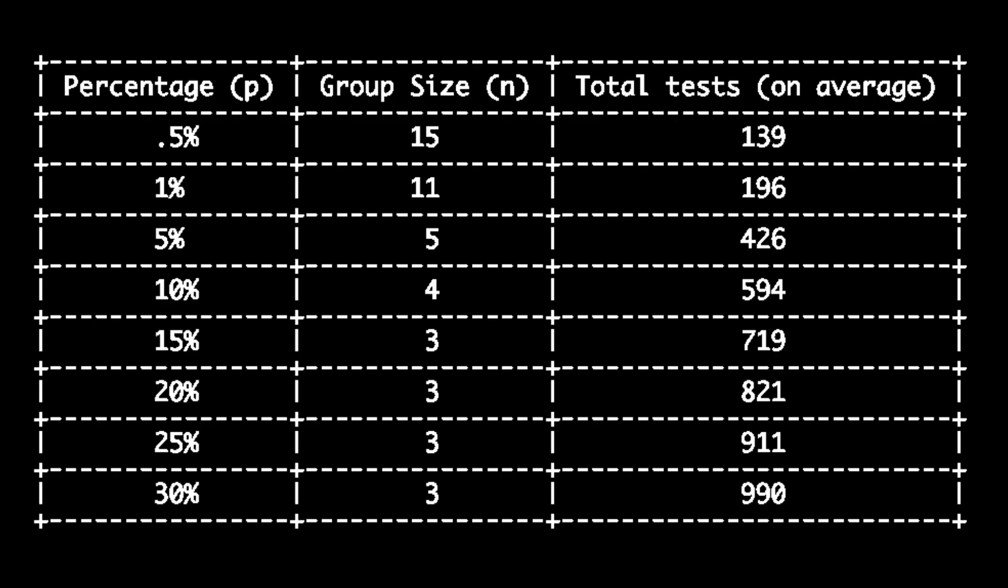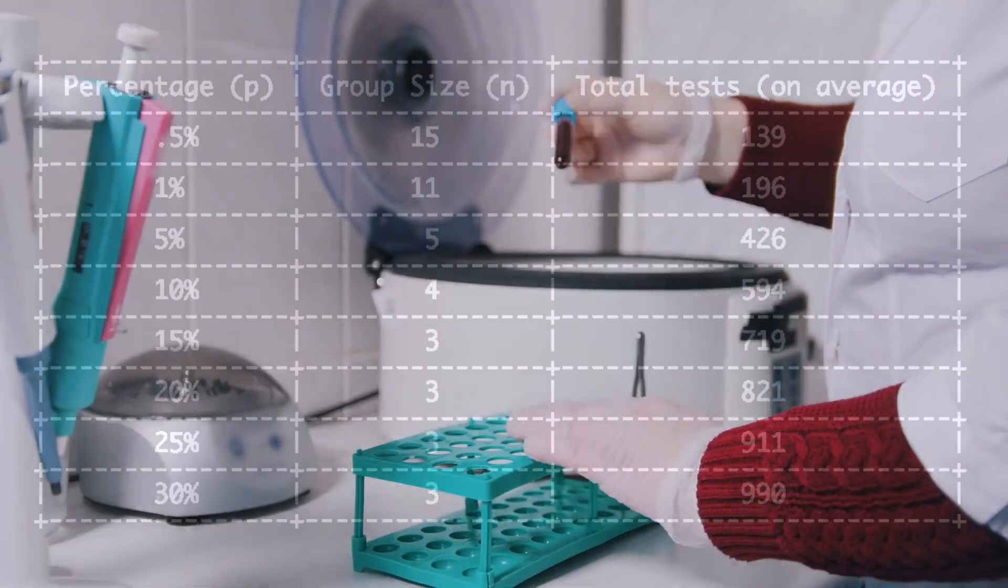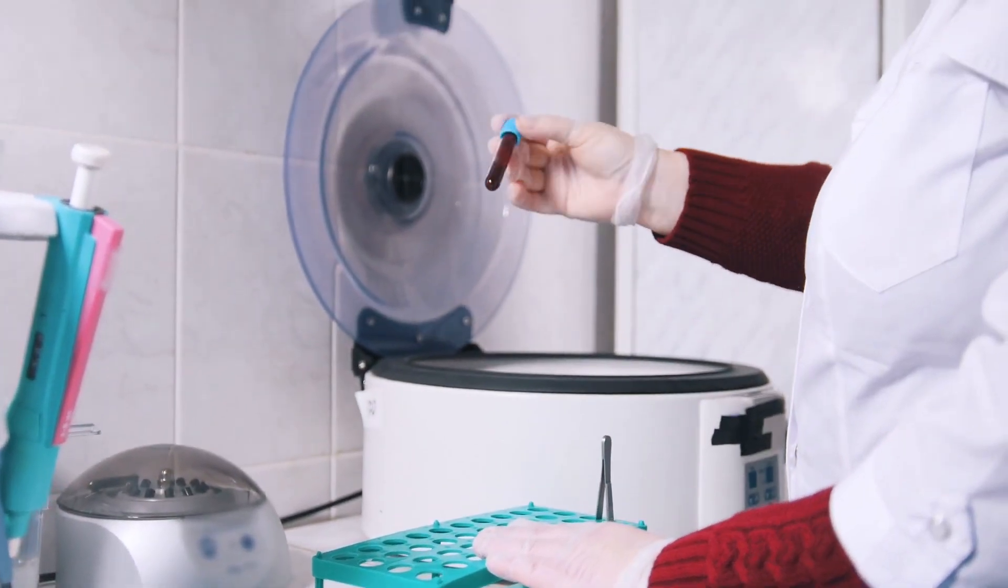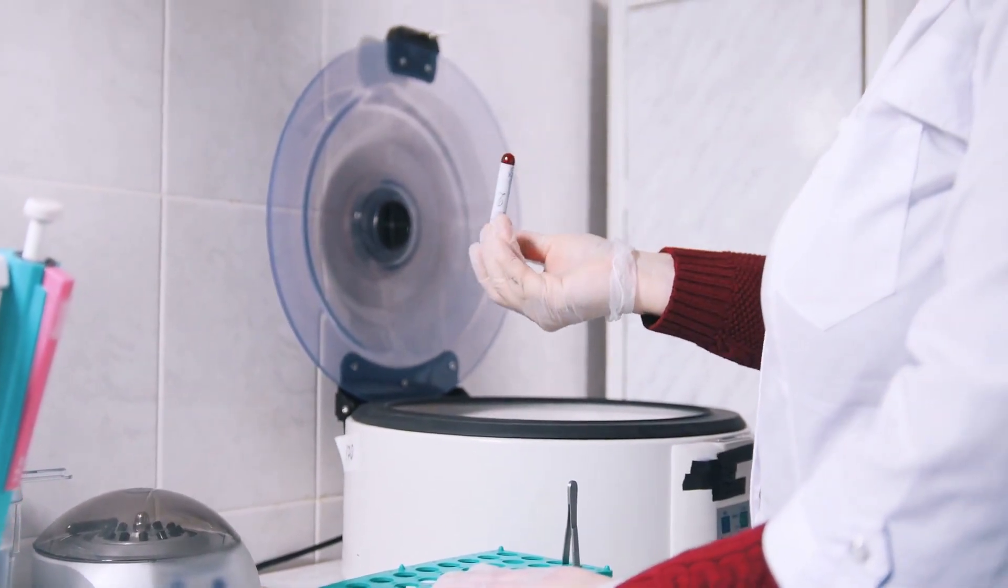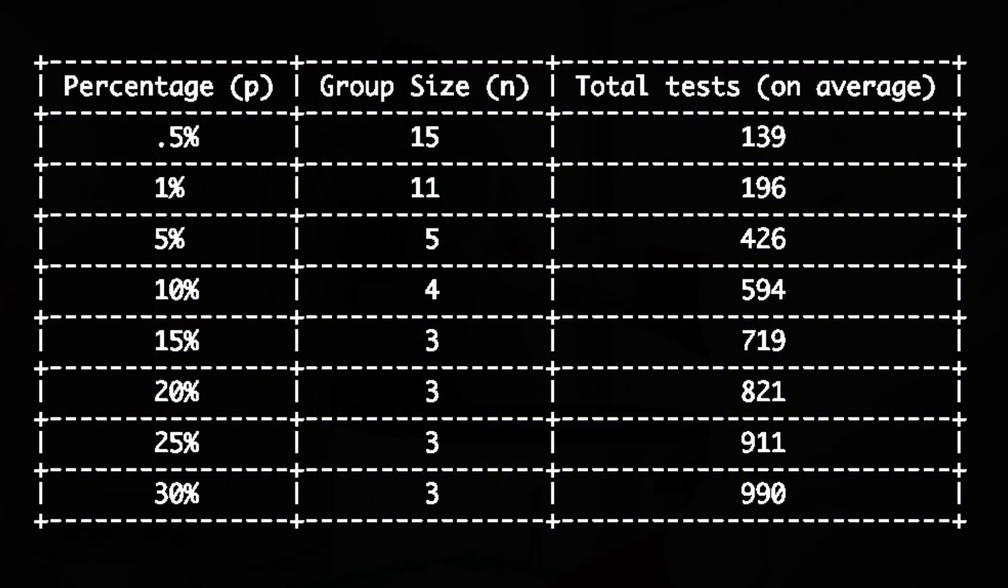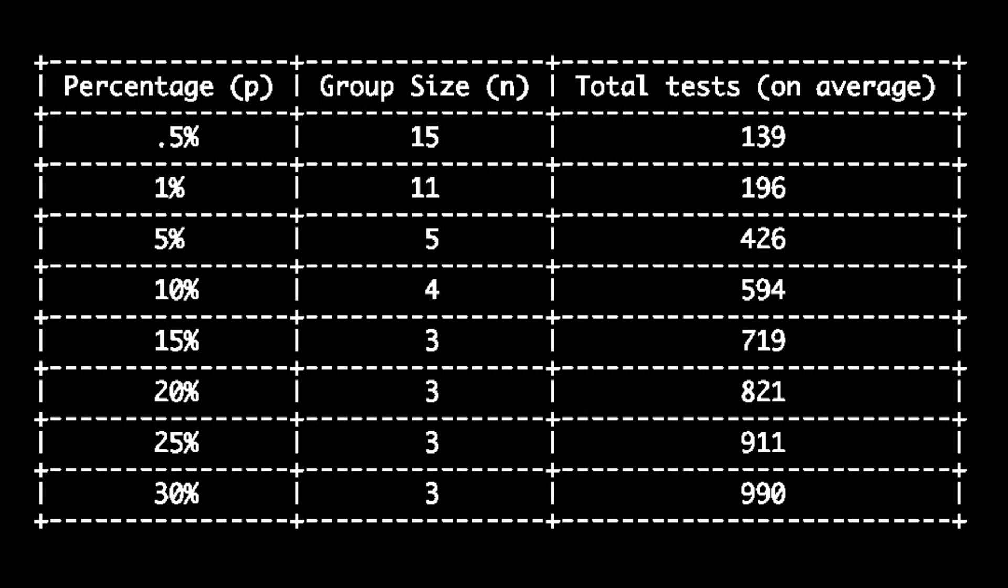Now, some people may think this has no applications, but that isn't the case. Because imagine you have 1,000 blood samples and need to test them for some disease, like HIV. Since the percentage of people who have HIV is much less than 20%, we can use these group testing techniques to minimize the number of tests a machine may need to perform.